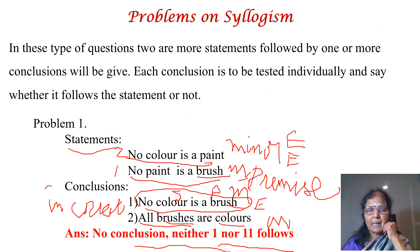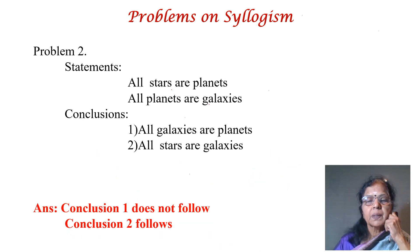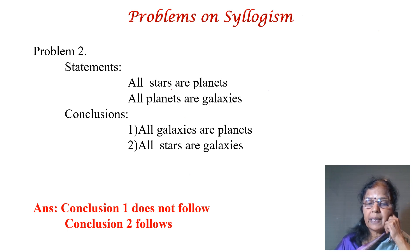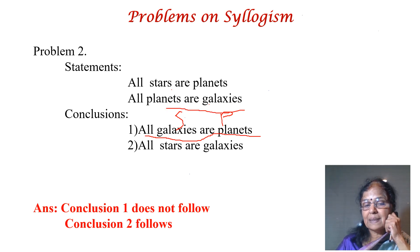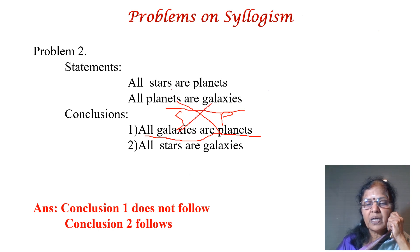Now the second problem. Read the two statements: all stars are planets; all planets are galaxies. Both are positive, so you should get a positive conclusion. The first conclusion is: all galaxies are planets. Find subject and predicate — galaxies is the subject and planets is the predicate. Both are present in the same sentence: all planets are galaxies. They are in the reverse order.